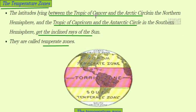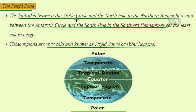The temperate zones lie between the Tropic of Cancer and the Arctic Circle in the north, and the Tropic of Capricorn and the Antarctic Circle in the south. These regions receive inclined rays of the sun — not direct rays. There is a north temperate zone and a south temperate zone, with the torrid zone in the middle being the heavy summer region.